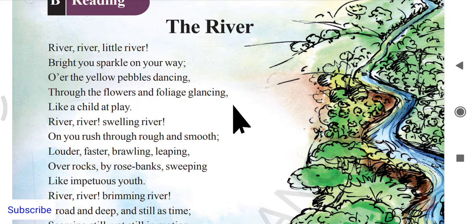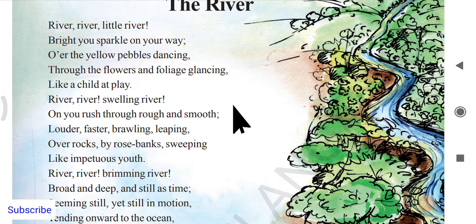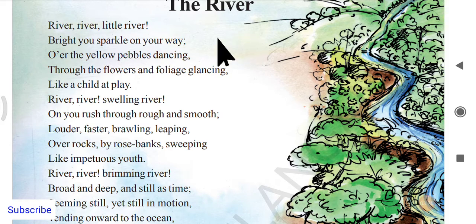'Glancing' means just like looking at something continuously with a brief look. Imagine how the river passes through flowers and leaves — the leaves stay like that as the water flows through them. Next, 'like a child at play' — like a child who plays and has a bright sparkle on his face, not caring about rocks or obstacles, going wherever he wants through fields and trees. The poet is comparing the river to a little child.